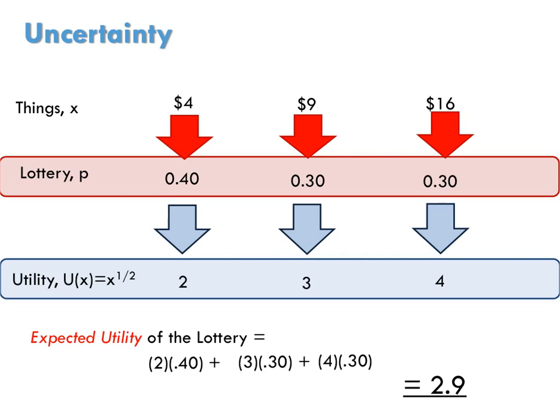Now let's calculate this individual's expected utility of the same lottery. To calculate expected utility, convert all the monetary prizes into utils. Supposing the utility function is x to the 1 half, winning $4 is winning 2 utils, winning $9 is winning 3 utils, and winning $16 is winning 4 utils. Using the probabilities of each as a weight, we get an expected utility of 2.9.